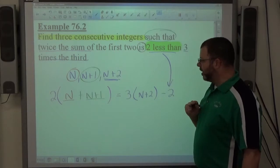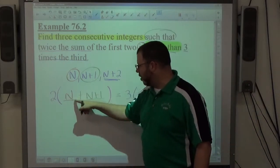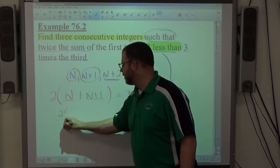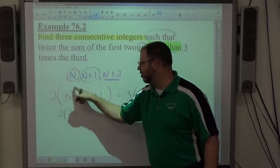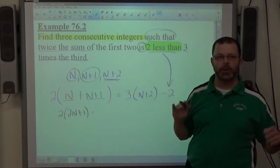As far as simplifying this is concerned, I could add the like terms inside the parentheses first. I could have also done two times n, two times n, two times one. I could distribute right away. Take your pick.